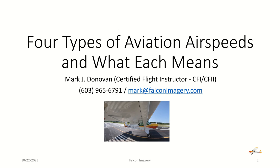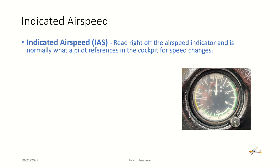We're going to talk now about the four types of aviation air speeds and what each means. First, we have the indicated airspeed. The indicated airspeed, read right off the airspeed indicator in the aircraft, is normally what a pilot references in the cockpit for speed changes.